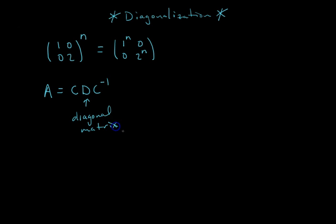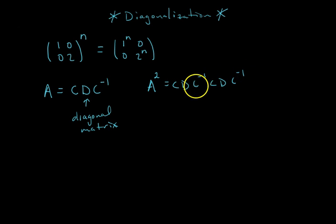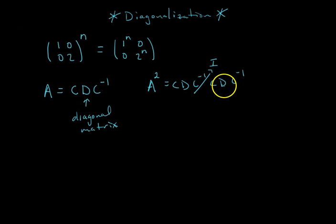The point of this is: if you're trying to take the hundredth power of some non-diagonal matrix, and you can write it in the form CDC⁻¹ where D is diagonal, then it becomes easy. For example, A² = CDC⁻¹ times CDC⁻¹. The C⁻¹C in the middle equals the identity matrix by the property of inverses, so this simplifies to CD²C⁻¹.